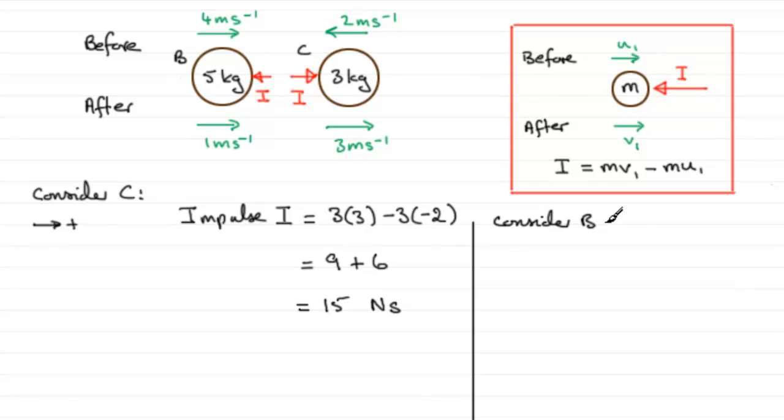Because in some problems it is actually easier to consider the other particle. But in this one it doesn't really matter. So I'll take the positive sense to the left in the direction of I. So have that as positive.